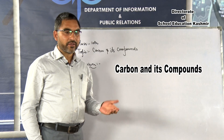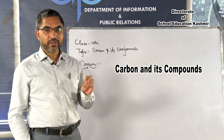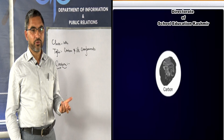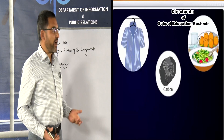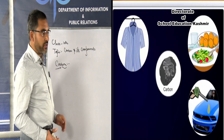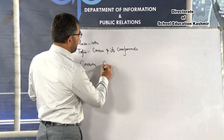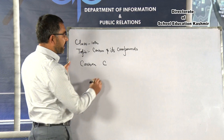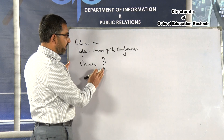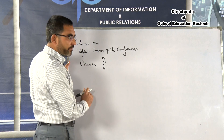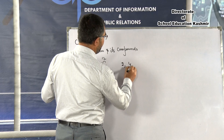You are eating food, taking tea — in everything you will find that Carbon is there. Carbon has the symbol C, atomic number 6, mass number 12, and electronic configuration 2 and 4.